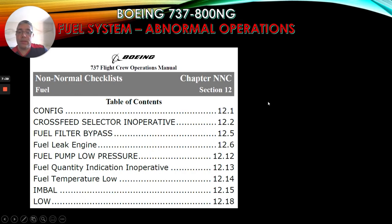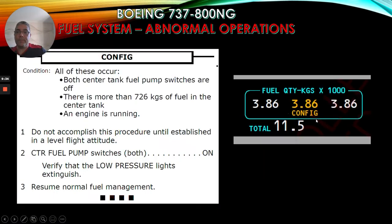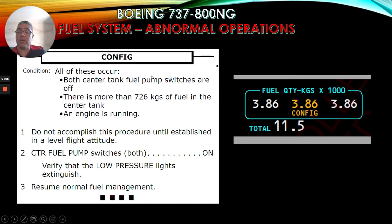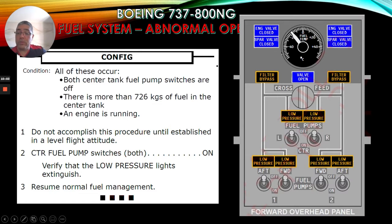Let's talk about the config indication and the fuel quantity indicator. Condition - all of the following occur: both center tank fuel pump switches are off, there is more than 726 kilograms of fuel in the center tank, and an engine is running. Number one: do not accomplish this procedure until establishing a level flight attitude. Then center fuel pump switches both on. Verify that the low pressure light is extinguished. Resume normal fuel management.